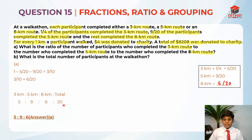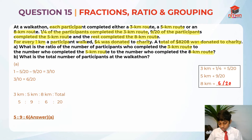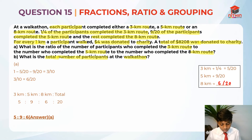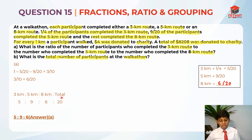Now let's move on to part B and read the question. What is the total number of participants at the walkathon? So they're asking us for the total number of participants, which is 20 units.